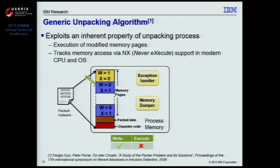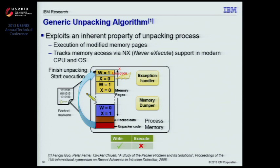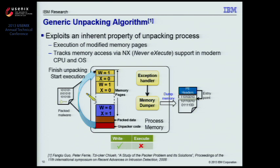This process continues until the unpacker finishes unpacking and jumps to the newly generated code for execution. Because of the lacking executable permission, an execution exception will occur, and MaltonX simply intercepts such exception and dumps the memory image containing the original malware code. MaltonX then creates a new binary by adding a dummy PE header on top and changes the entry point to point to the address where this execution exception occurs, and passes this reconstructed binary to a disassembler to produce a sequence of instructions for feature extraction.